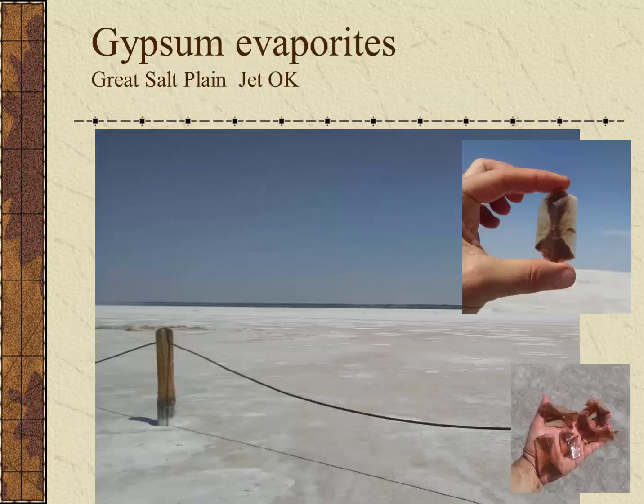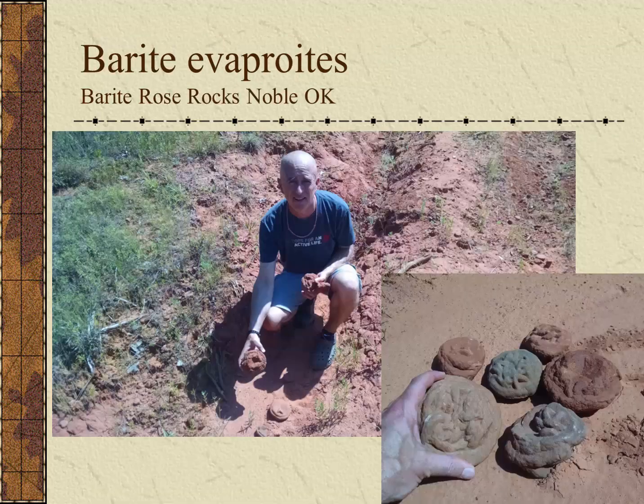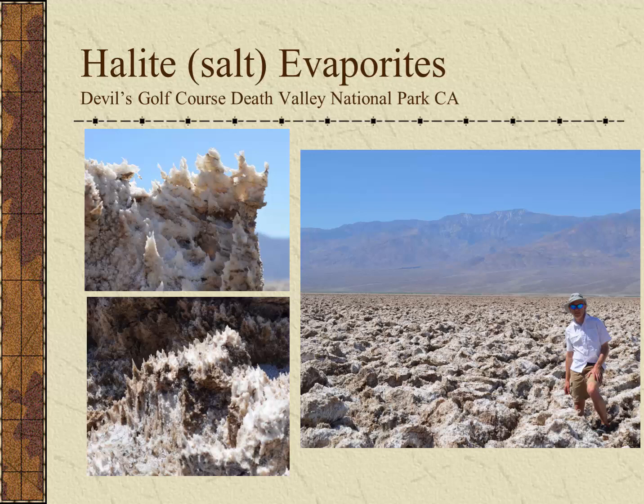Another good example of an evaporite is the gypsum crystals found on the Great Salt Plains near Jet, Oklahoma — known as hourglass selenite gypsum crystals, with sand inclusions in a unique hourglass pattern. Also from Oklahoma, near Noble, are the barite or rose rocks, which are uniquely twinned crystals of barium sulfate, very common in a small area near Lake Thunderbird. A particularly unique example of evaporites may also be found at Devil's Golf Course in Death Valley, where very jagged halite crystals remain from the evaporation of Lake Manly.